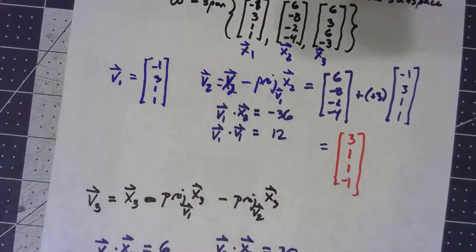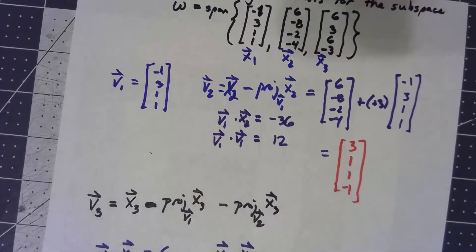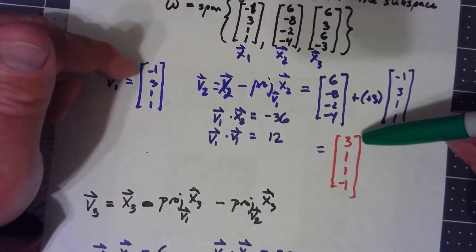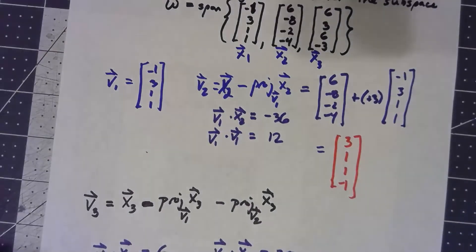I probably should have checked as I was going through, but certainly it's worth going through and making sure that every pair of these is in fact orthogonal. I won't go through every one, but here, negative 3, plus 3, plus 1, minus 1, that's certainly 0.